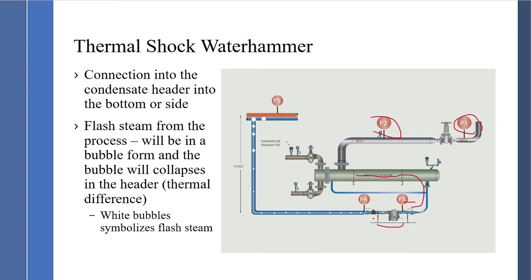To get the condensate temperature down to the lower pressure, a percentage is released as flash steam. The flash steam exists as bubbles carried along the condensate line. As pressure is reduced, the bubble increases in size. When the bubble enters below the condensate level in a condensate line, it collapses and you hear ping, ping, ping. With higher condensate flow, the bubble is much larger and you hear bang, bang, bang.